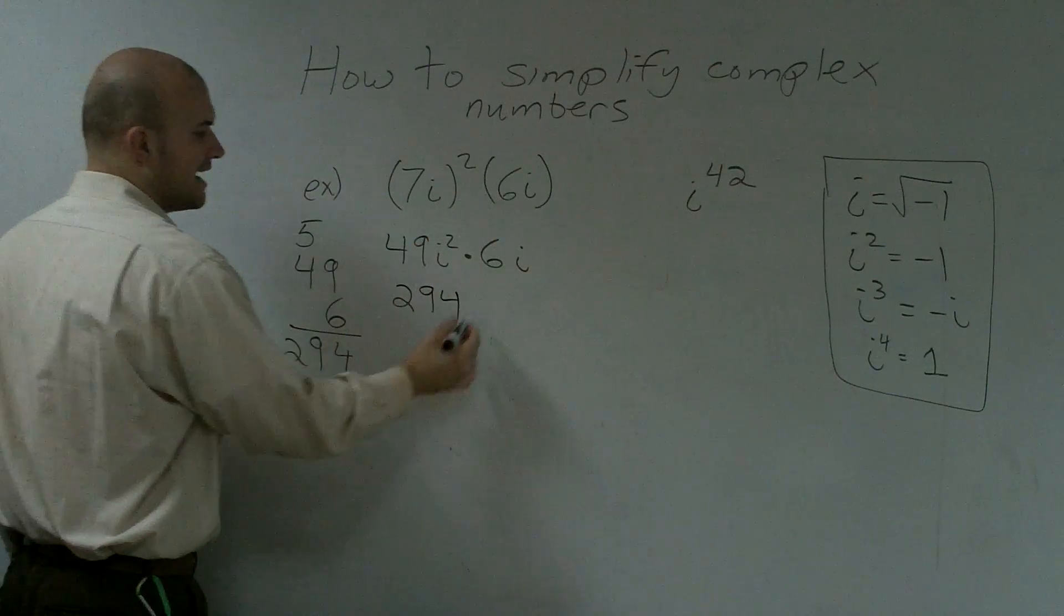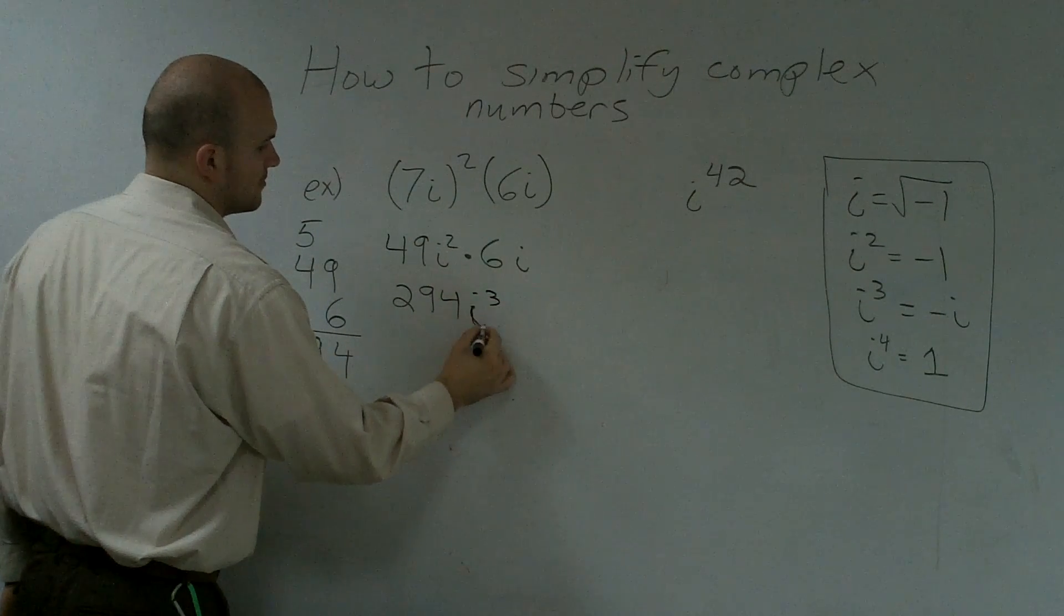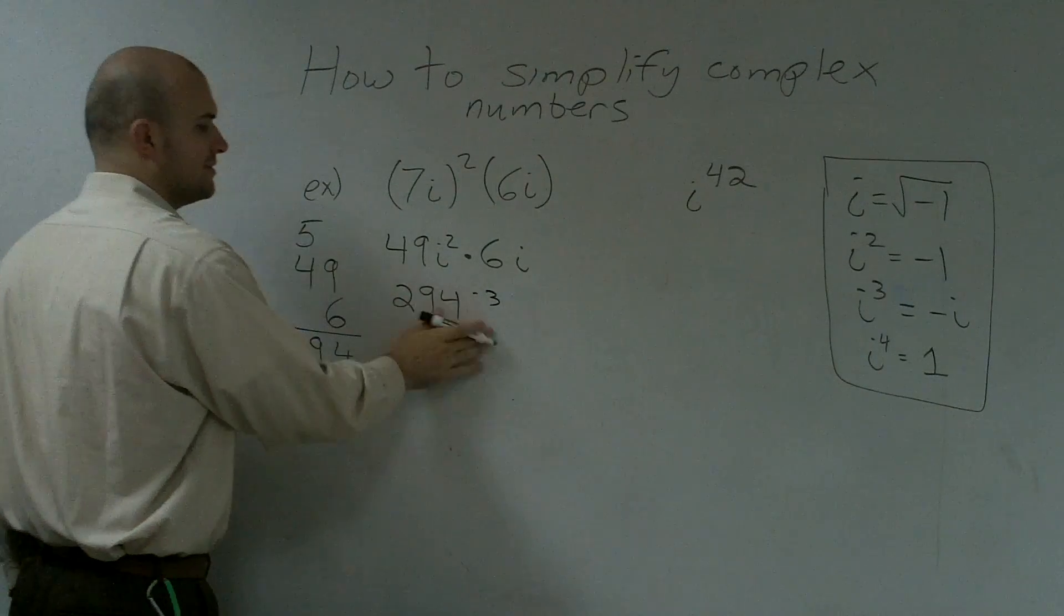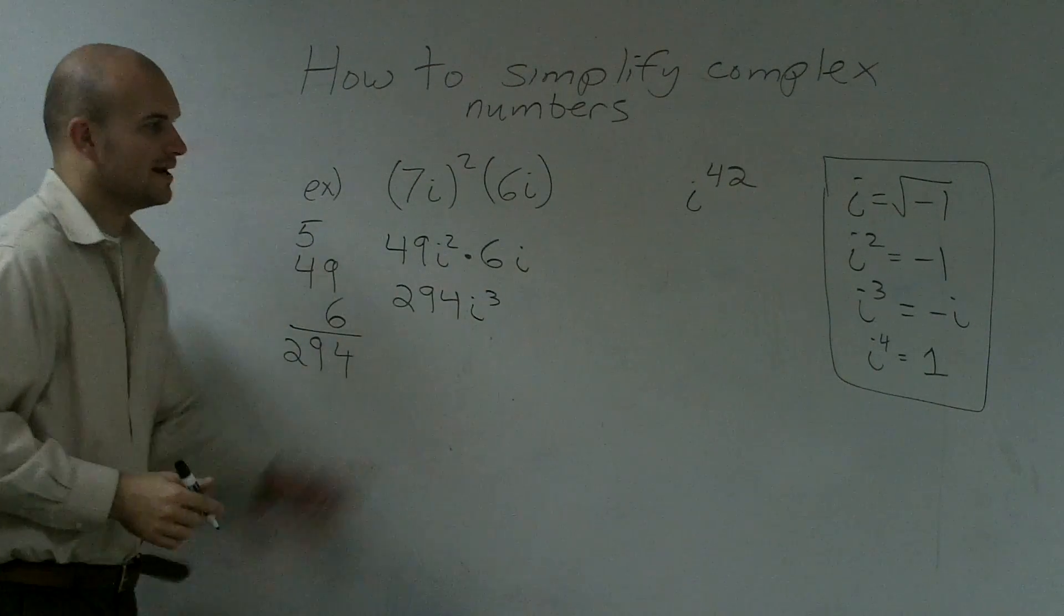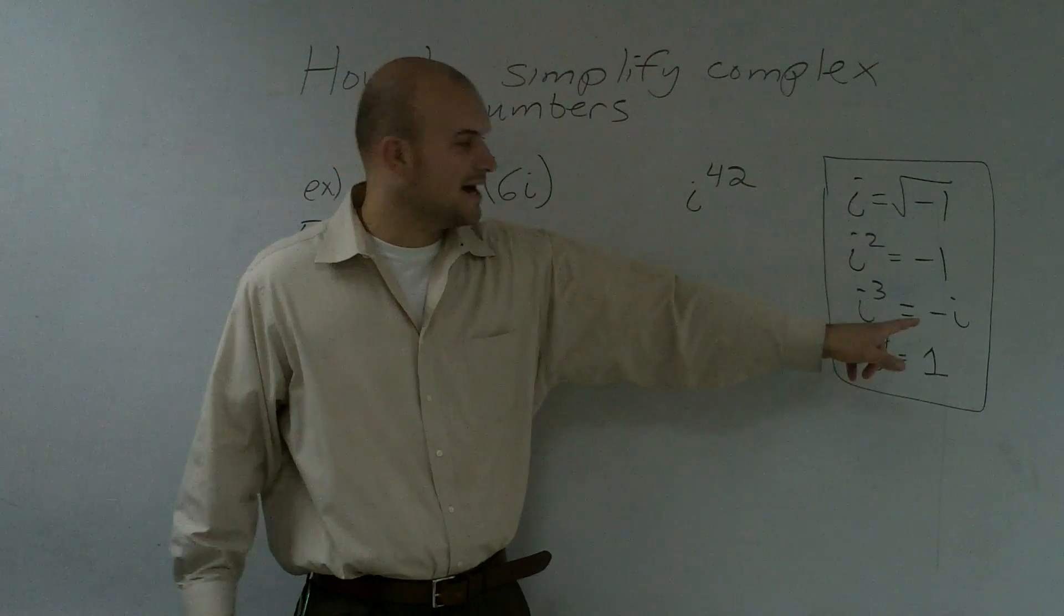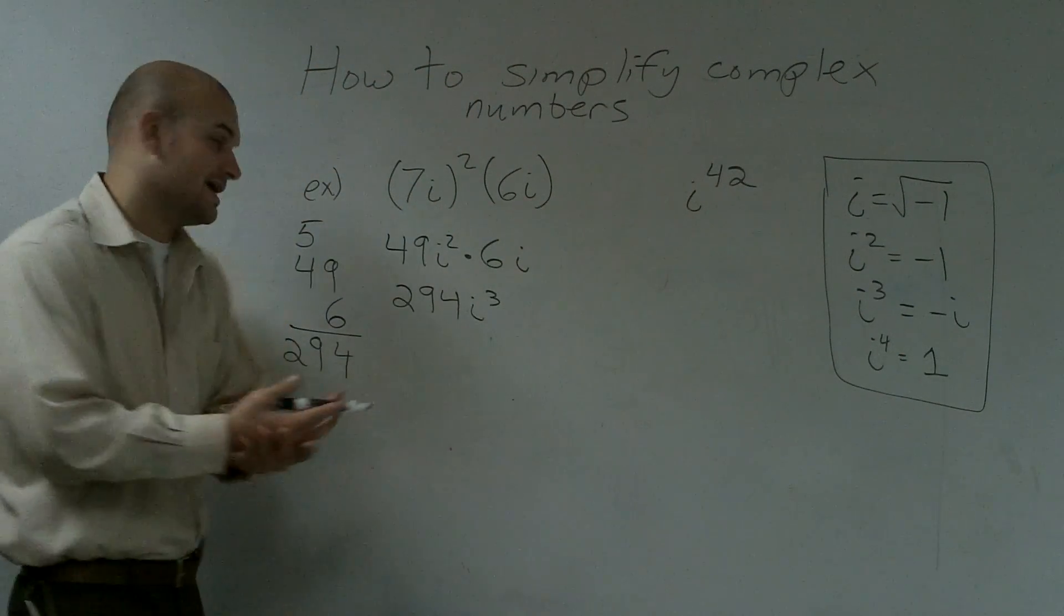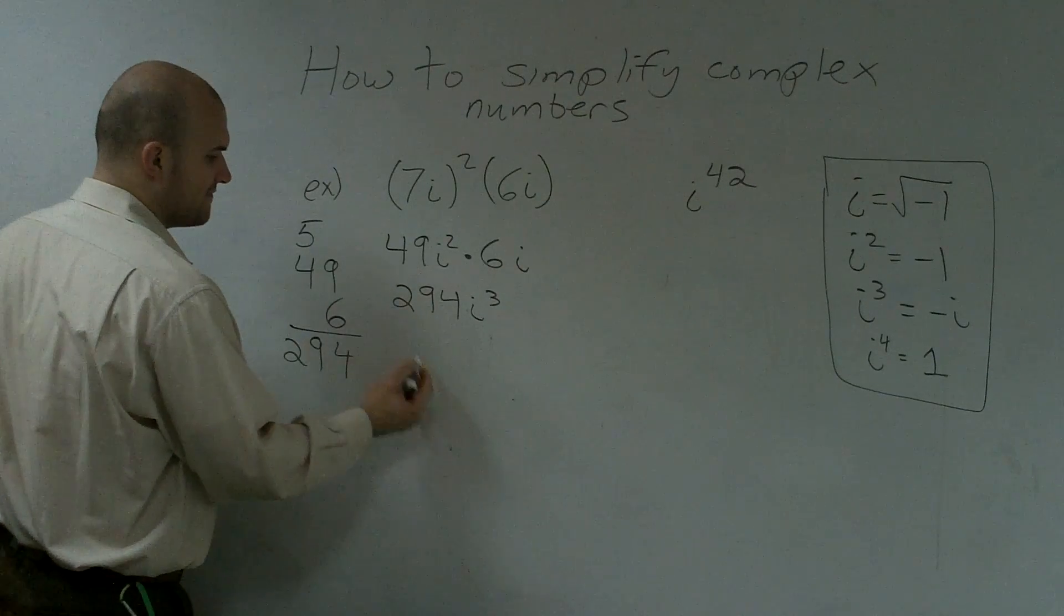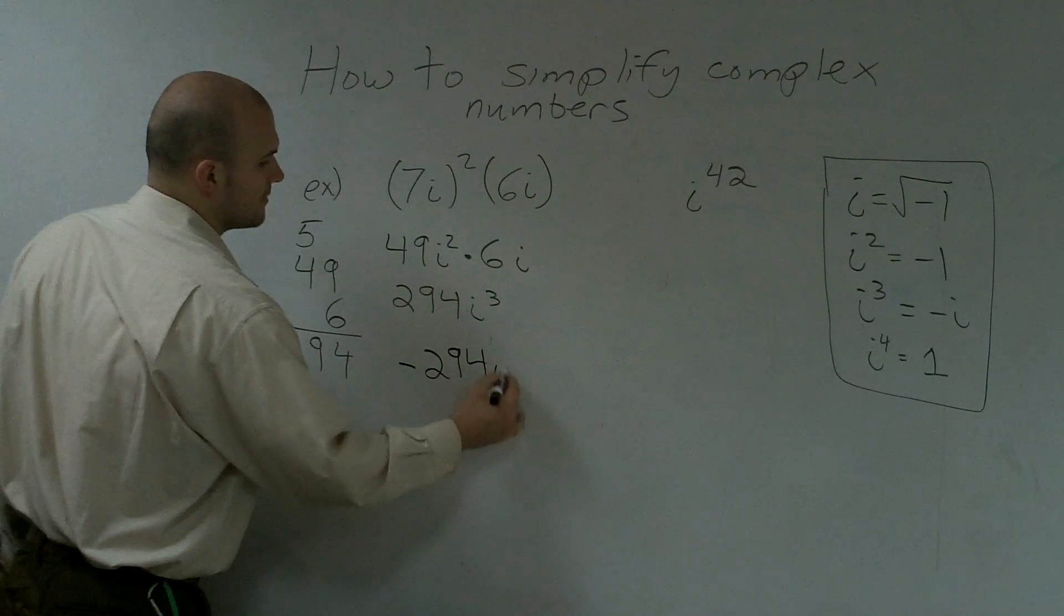Then i squared times i becomes i cubed. That's a bad i, let me redo that. So when I go and look up here and I say, what does my i cubed represent? That represents a negative i. So therefore my answer is still going to have an i in there, but it's going to be a negative. So my final solution is negative 294i.